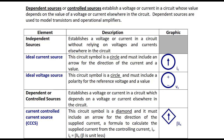An ideal voltage source circuit symbol is also a circle and must include a polarity for the reference voltage and value VS. You should be familiar with ideal current and voltage sources from your physics course. There are also four dependent or controlled sources. They establish a voltage or current in a circuit which depends on a voltage or current elsewhere in the circuit. An example of a dependent source could be an operational amplifier or a transistor.